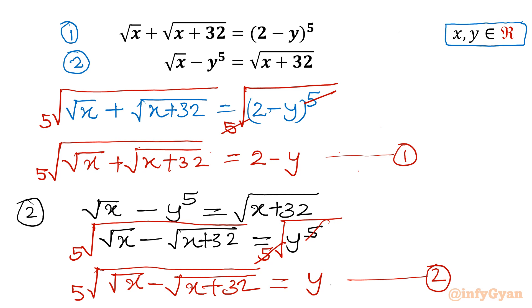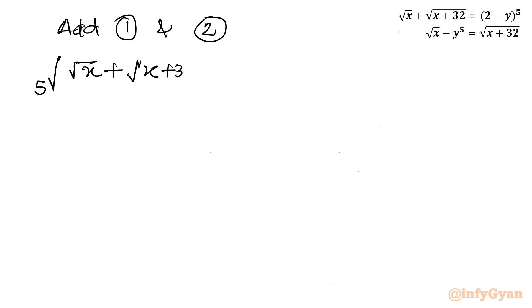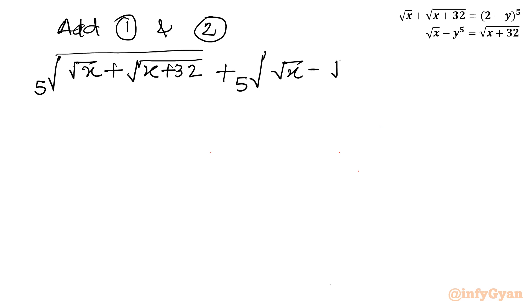Now I will add both equations. Once we add, the minus y and plus y will cancel. Adding equation 1 and equation 2 gives us: fifth root of square root x plus square root of x plus 32, plus fifth root of square root x minus square root of x plus 32, equals 2. This is our key equation.